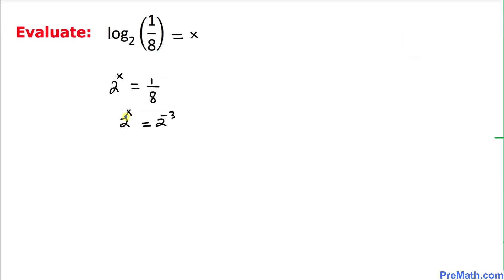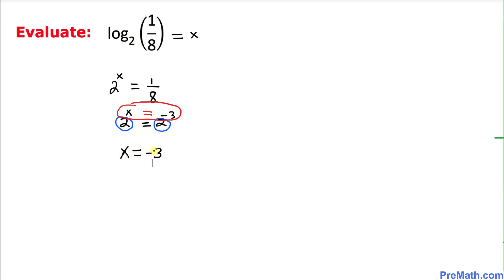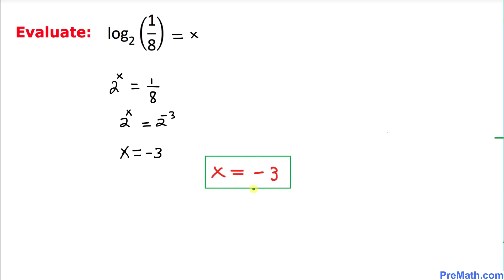Since the base is the same on both sides (which is 2), we can equate the exponents. So x equals negative 3, and that is our final answer.